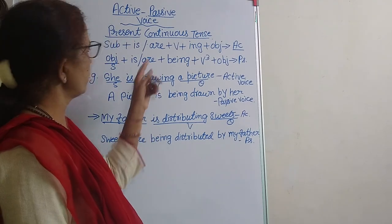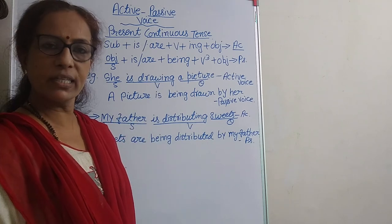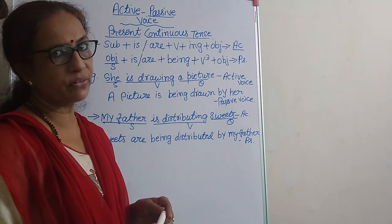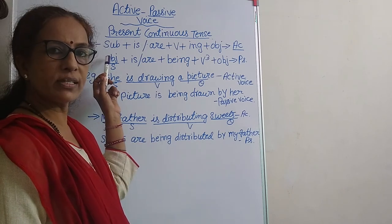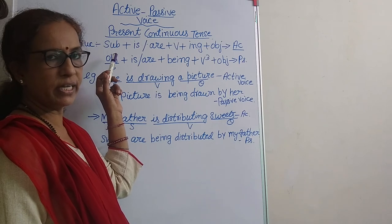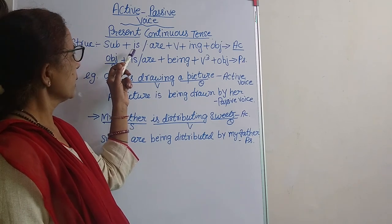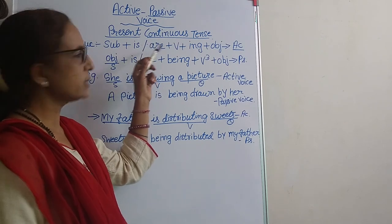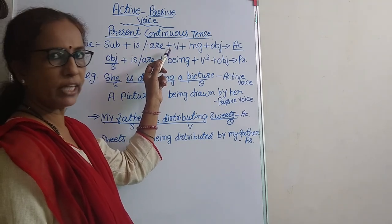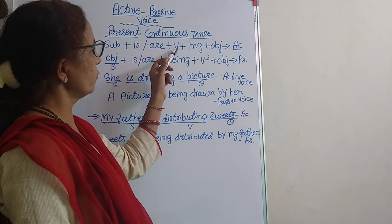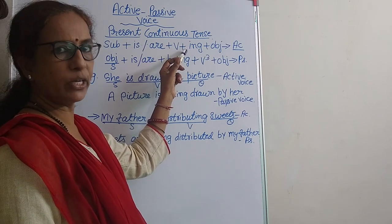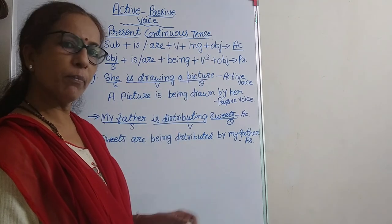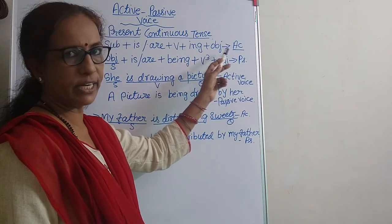Now, see the structure. You should first be aware of the structure. Then, if you arrange the sentence according to the structure, you will never have any problem in active and passive voice. So, what is the structure for active voice? The subject, then 'is' or 'are' — these are the helping verbs which are a must for a continuous tense sentence in present tense. Then the verb plus 'ing' is added because the task is continued, and the object completes the sentence. This is the structure for the active sentence.